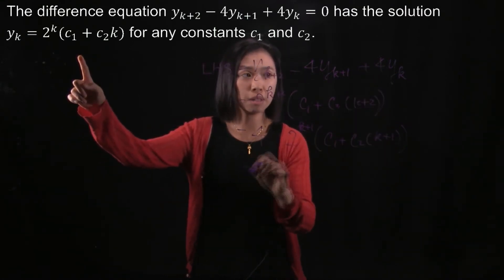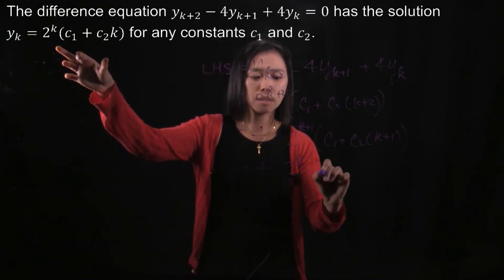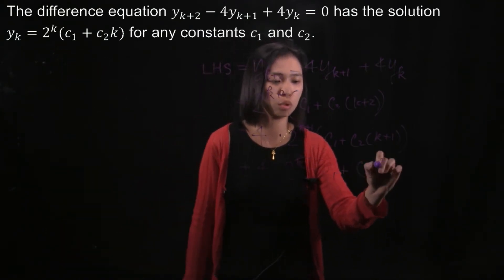And then at the end you have plus 4 times y_k. So you simply copy this whole thing down: 2^k(c_1 + c_2k).